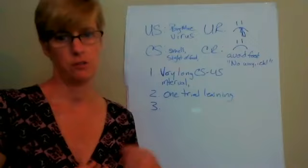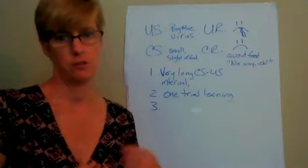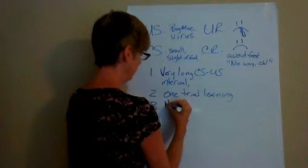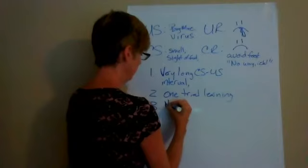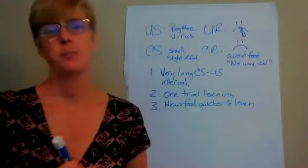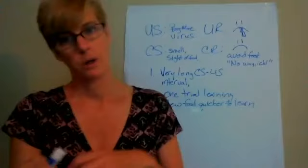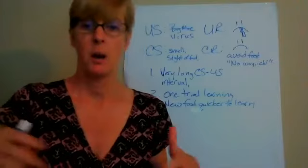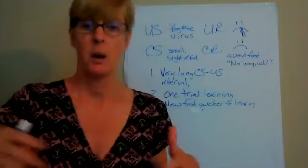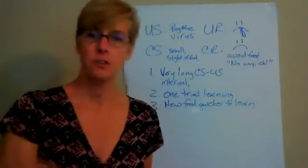The last feature is not unique to conditioned taste aversion — it's true of all classical conditioning — but it's interesting to note: we're quicker to pick up aversions with novel or new foods. If you have chicken, mashed potatoes, corn, and grandma's weird blue jello salad, and you got sick after that meal, you probably wouldn't develop an aversion to the corn and chicken — but that new weird blue thing, you might avoid next time. The novel item is what you'll connect the aversion to.